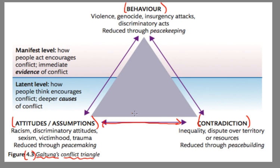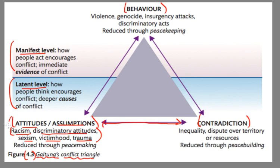It's important to note that they have latent and manifest levels — I'll explain what these levels mean shortly. So the first factor is attitudes and assumptions: attitudes that exist in societies such as racism, discriminatory attitudes, sexism, victimhood, and trauma. When those occur, even if the other factors do not, you could have a conflict that is brewing — maybe not full-fledged violent conflict, but it's on the way.